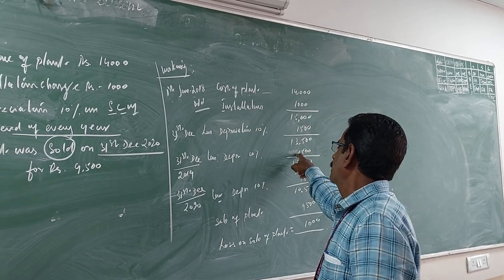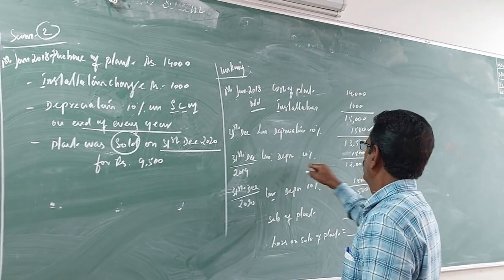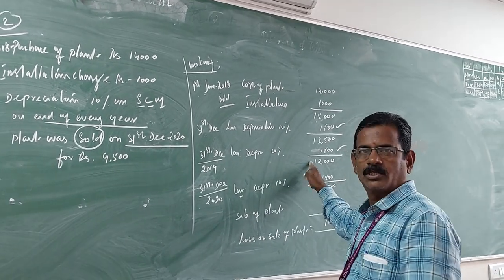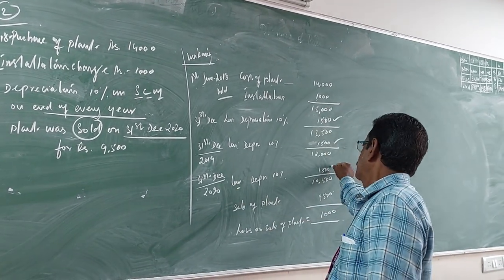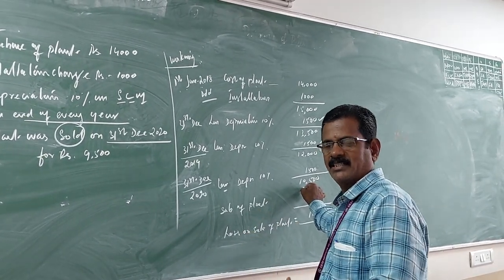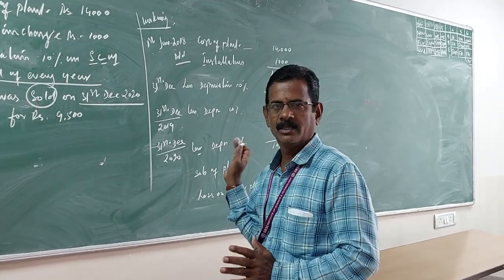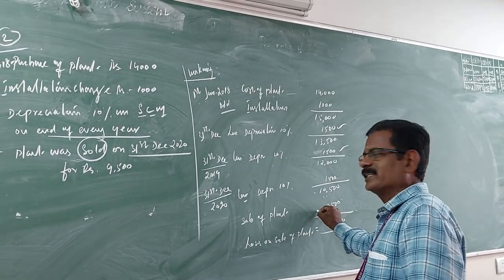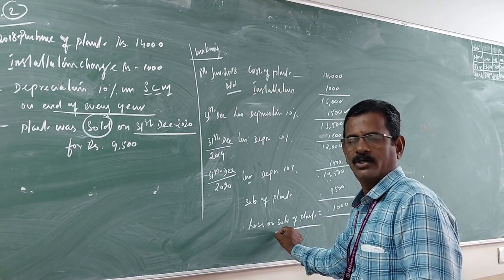The cost of the plant is 10,500. Depreciation is 10%, so the depreciation amount is 1,500. On the date of sale in December, the cost of the plant is 10,500 and the sale price of the machine is 9,500. Therefore, there is a loss on sale of the plant — the cost was 10,500 and the sale was 9,500.